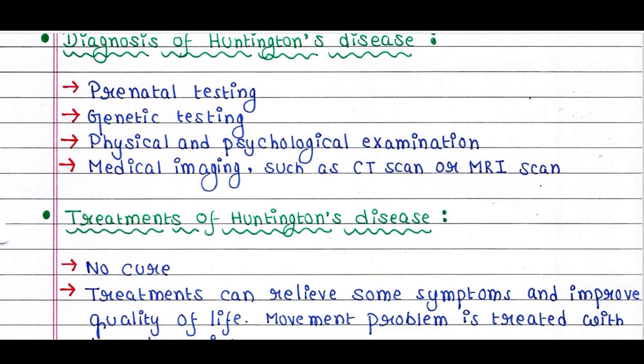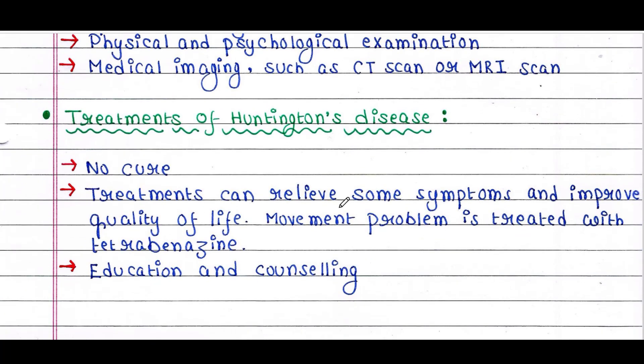We will see some treatments for Huntington's disease. Basically, there is no cure for this disease. Treatments can relieve some symptoms and improve quality of life. Movement problems are treated with drugs like tetrabenazine. Education and counseling is very important, since these patients are sometimes suicidal and may develop different mental problems.